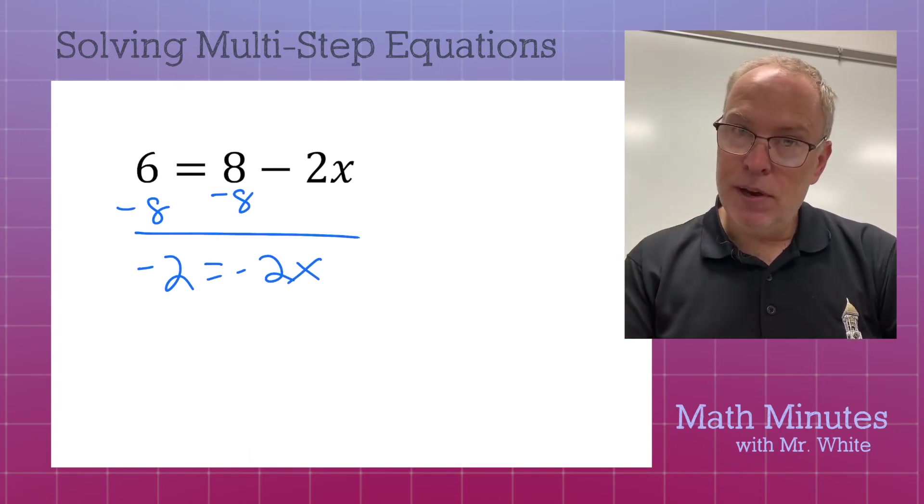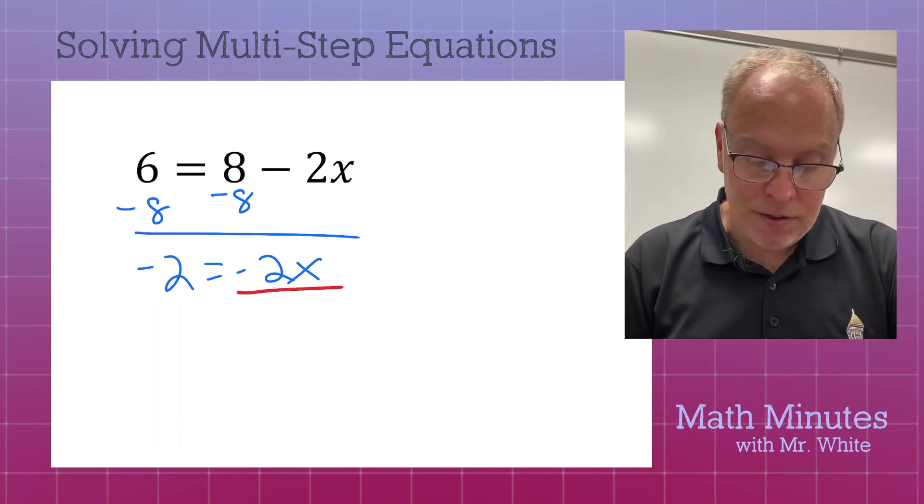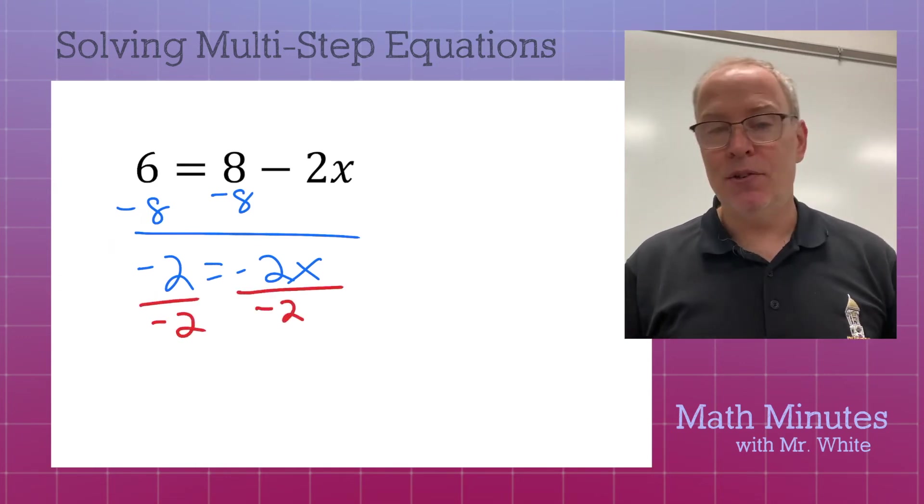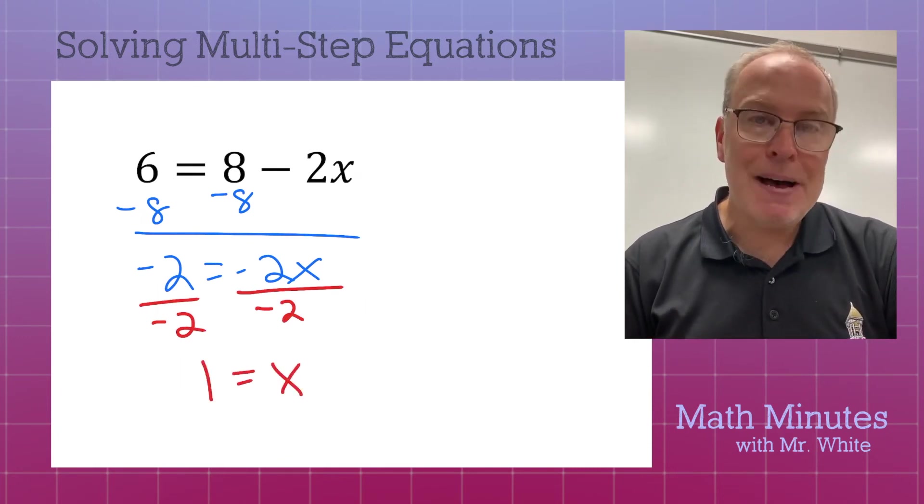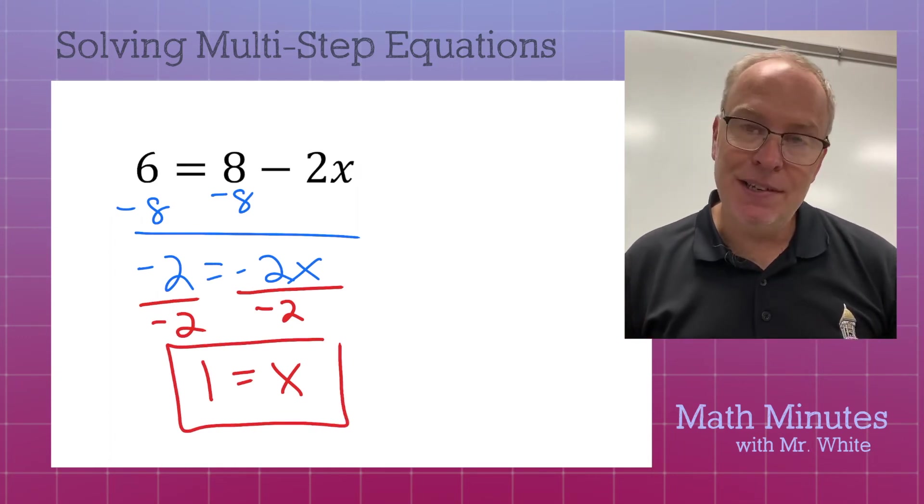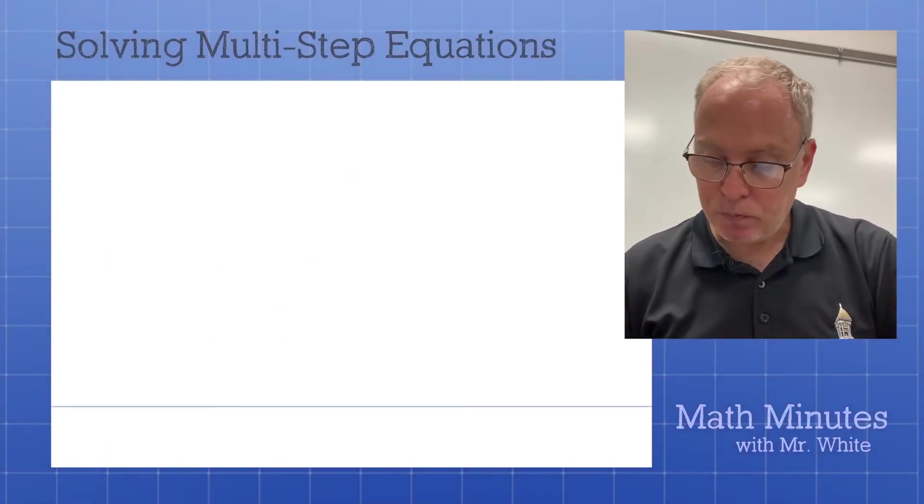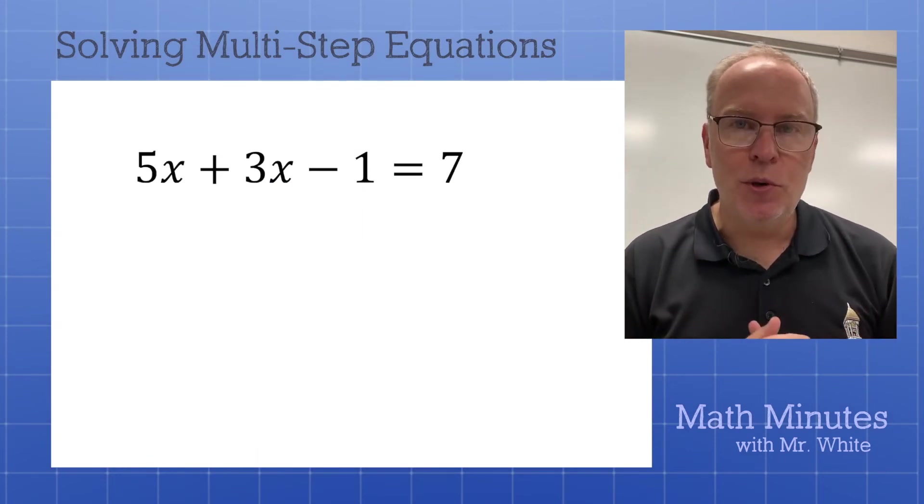Negative 2 equals negative 2x. Now, we look at undoing. The inverse operation for multiplication is division. So, we use this fraction bar. Don't lose these minus signs. There's a lot of them floating around. You don't want to drop those. x equals positive 1, positive 1. And if you plug that in, you do get 6 out of that right side.